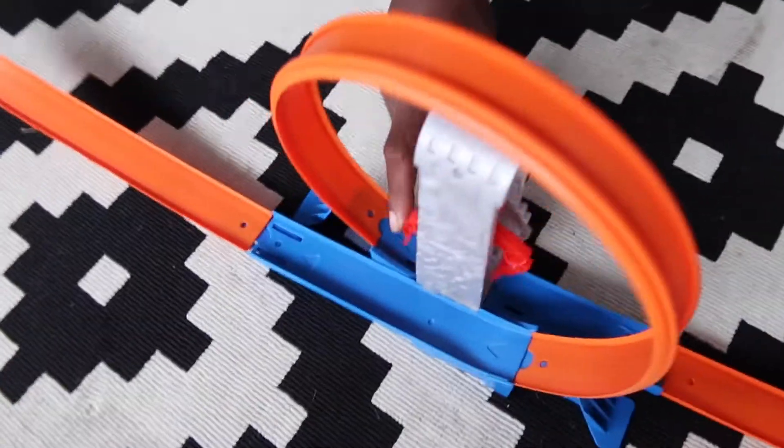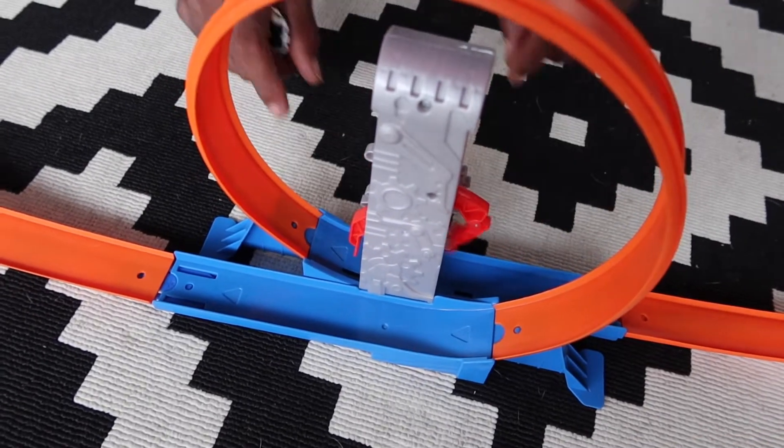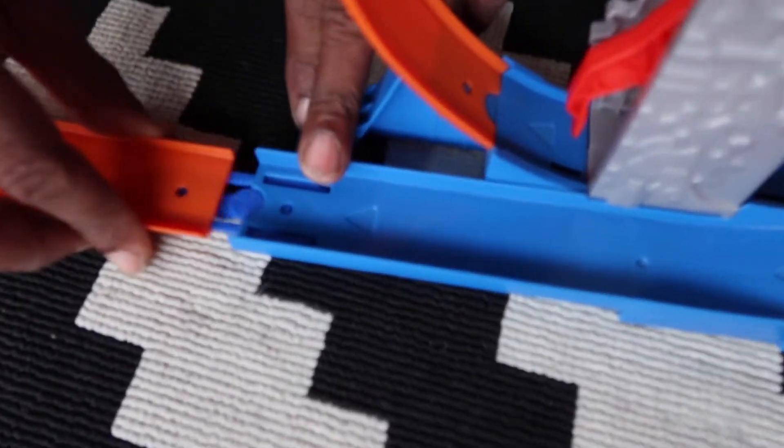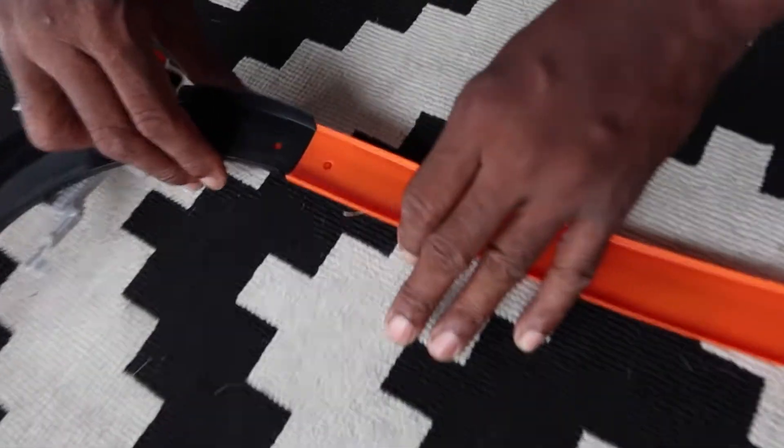This right here, you have to actually set it so it can spin the car around, so it has to stay like this. This doesn't stay connected too well. And then the same thing with this turn. Look, there's a gap. There's another gap.